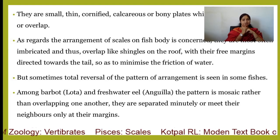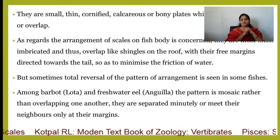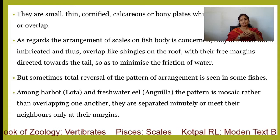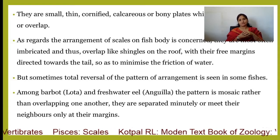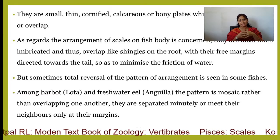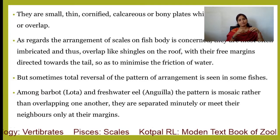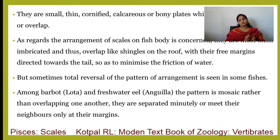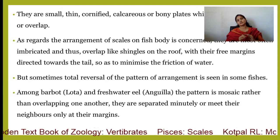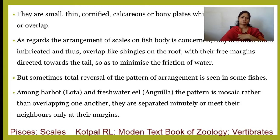For example, scales with their free margins directed towards the tail so as to minimize the friction of water — their pattern is to reduce friction. The fish is aquatic in nature and there are many modifications and adaptations to best fit the environment. When we talk about aquatic life and the streamlined body, the nature of water requires reducing friction, and the pattern of scales depends on how much water friction can be reduced.